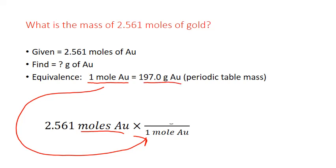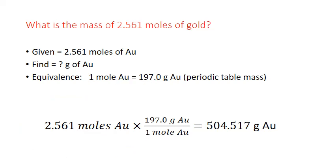And since I want to get grams, that has to go on the top of my conversion factor. So I multiply by 197. I plug that into my calculator. I get 504.517 grams of gold. Again for rounding to an appropriate decimal place, I look at the starting number and its significant figures. I have four significant figures in that number. So I have to round my final answer to four significant figures. That means that I have to decide if 504.51 rounds up or down. And of course it rounds down to 504.5 grams of gold.